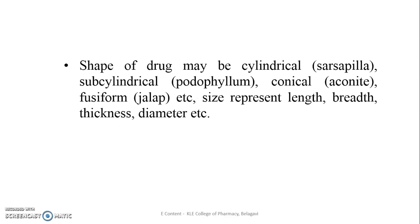Shape also plays a very important role in organoleptic evaluation. The shape of a drug may be cylindrical, sub-cylindrical, conical, or fusiform. For example, sarsaparilla is cylindrical; podophyllum is sub-cylindrical; aconite is conical; and jalap is fusiform.